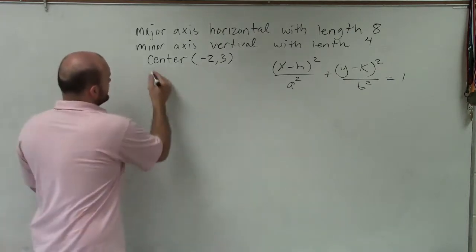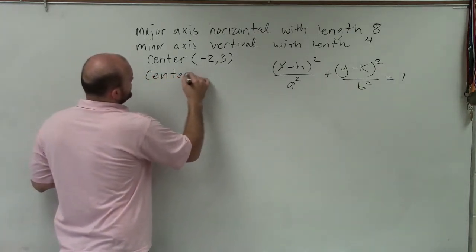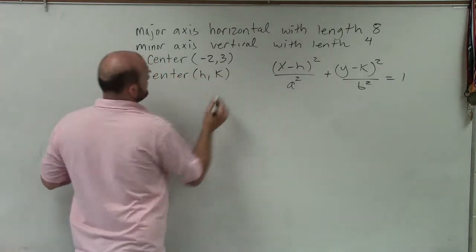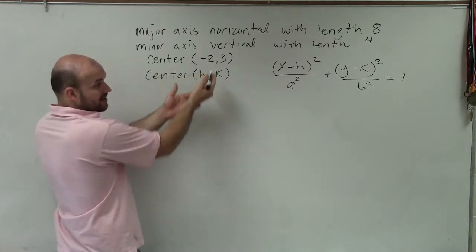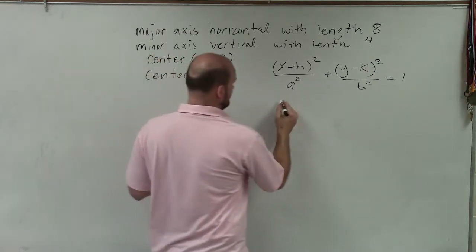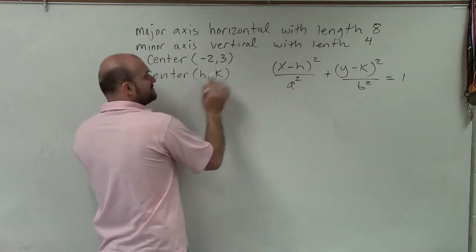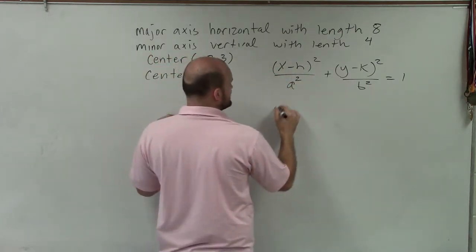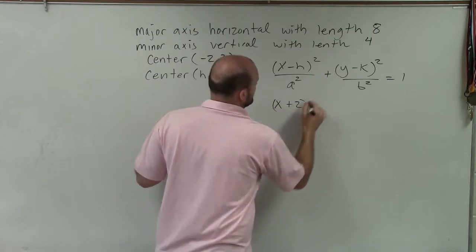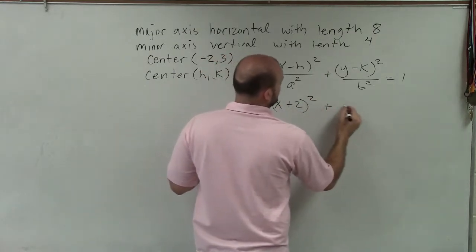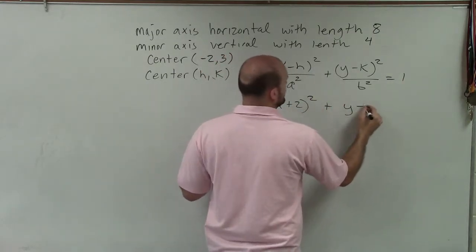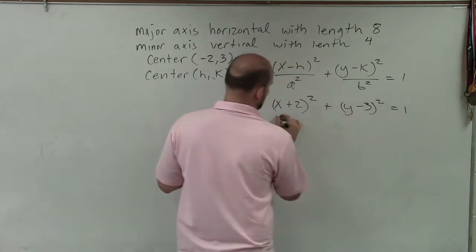Now, remember, the center is represented by h and k. So we already have that information. So remember, it's x opposite of h. So here, h is negative 2. So opposite of negative 2 would be positive 2. So I write x plus 2 squared plus y opposite of 3 would be negative 3 squared equals 1.